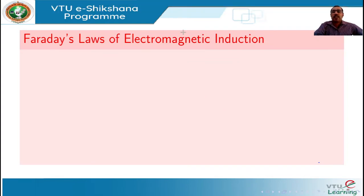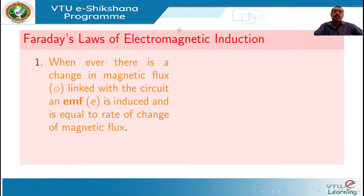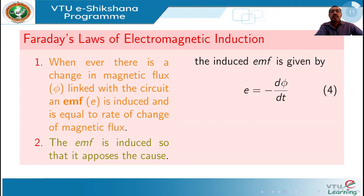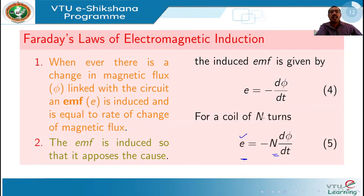The next topic is Faraday's laws of electromagnetic induction, which relates the interacting electric and magnetic fields. The first statement is: whenever there is a change in flux linked with the circuit, an EMF is induced, and the induced EMF is proportional to the rate of change of magnetic flux. The second part states that the EMF is induced so that it opposes the cause — that is, it opposes the rate of change of flux. Mathematically, E = −dΦ/dt. The negative sign indicates opposition. For a coil with n turns, the induced EMF is n·dΦ/dt.